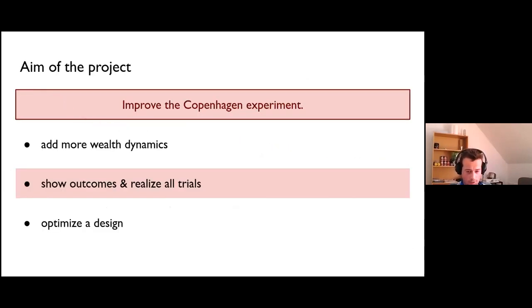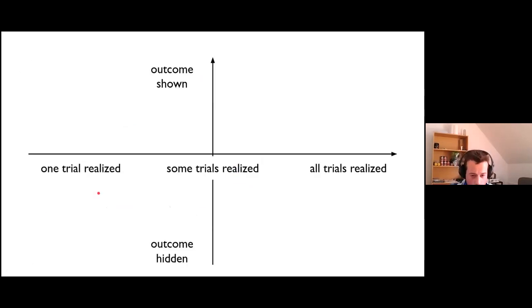Now let's move to the second point, which is this problem of trial realization. When we design a gambling experiment, any gambling experiment, we have basically two choices to make. We have to decide how many trials we really realize. We might realize only one and then just see how subject would behave in different trials, but assuming that only one trial will be realized. And we can hide or show the outcome. We can provide this constant feedback loop for the subject, or we can hide and show the final wealth after the experiment.